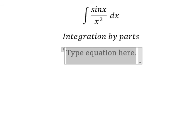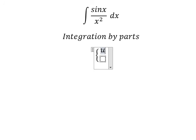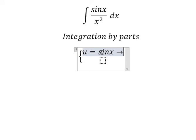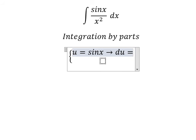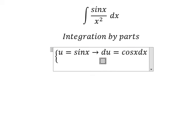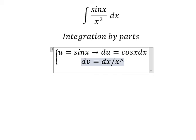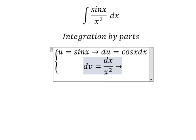I will set u equals sin x. Taking the derivative of both sides, we have du equals cos x dx. For dv, we have dx over x squared. Integrating this, we get v equals negative 1 over x.